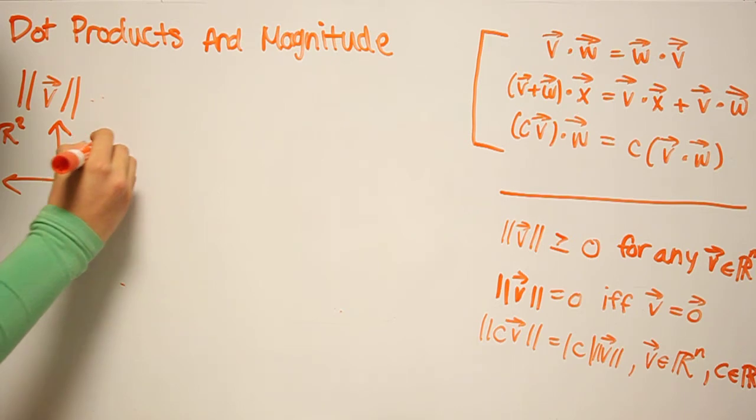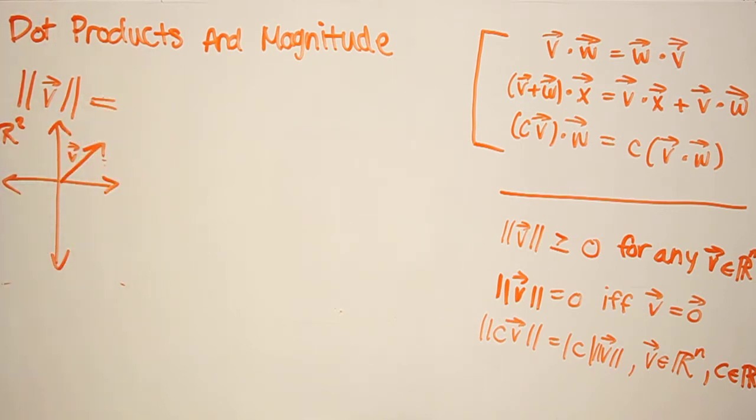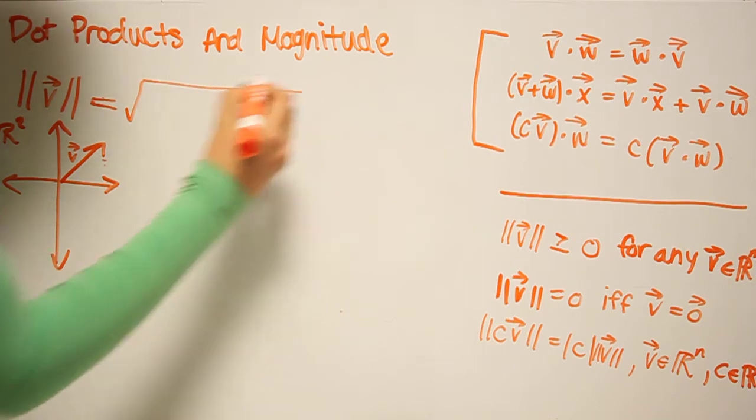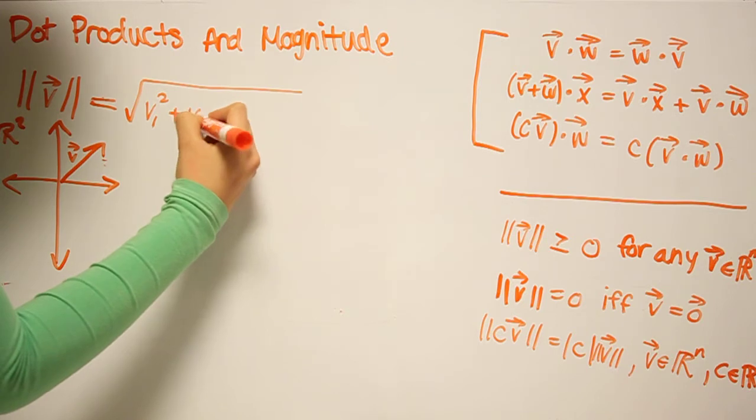Geometrically, it's simply the length of this vector. So we have this vector V that lives in Rn is equal to the square root of the sum of the squares of its components.